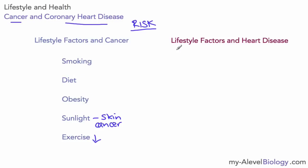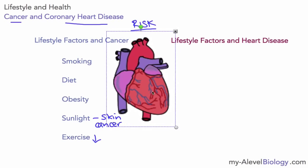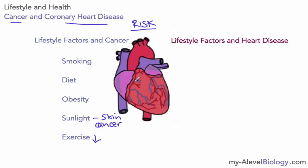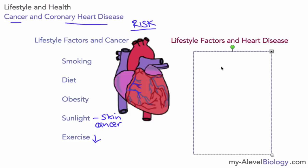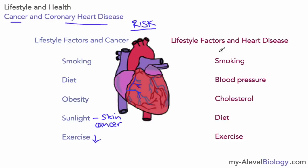When looking at coronary heart disease, we are talking about disease of the arteries that supply the heart with food and oxygen. These are very important — if the heart doesn't get the food and oxygen it requires, it could stop working, which we call a heart attack. The lifestyle factors involved include smoking, high blood pressure, and high levels of cholesterol linked to diet. Exercise has been shown to be associated with decreased risk of coronary heart disease.